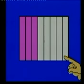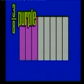Since three of the eight equal parts of paper are purple, we can say that three-eighths is the fraction of purple paper.